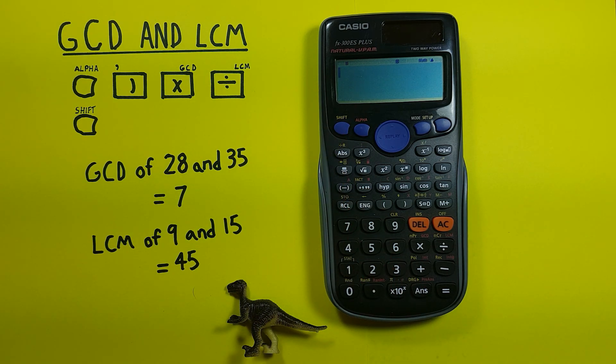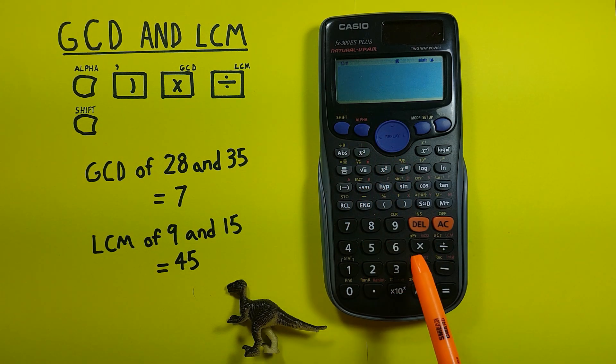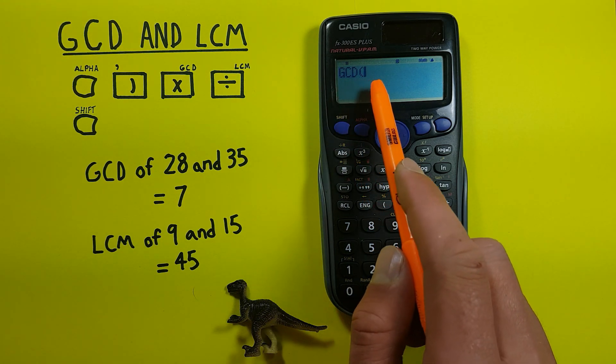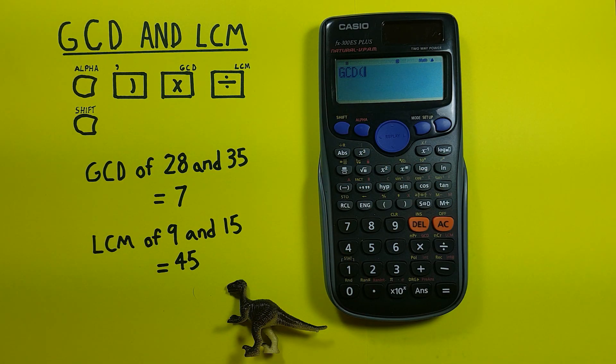Now to get started let's say we want to find the greatest common divisor of 28 and 35. To get started we use alpha and then the multiplication key because the alpha function of the multiplication key is GCD. There we go, GCD, and then it's asking us what numbers we want to use.